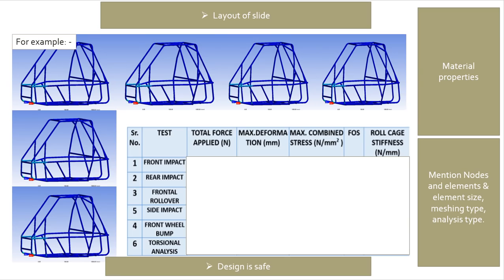Here, you have to mention number of nodes, elements, element size - all these points we will see in next video. We will also see which kind of images should be put. All six analyses: front, rear, front rollover, side impact, front bump, torsional analysis - force applied, total deformation, maximum stress, factor of safety, and rollover stiffness.